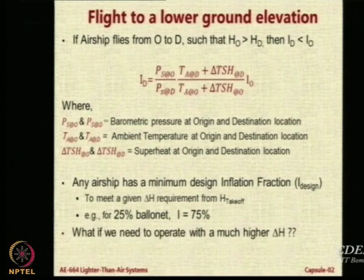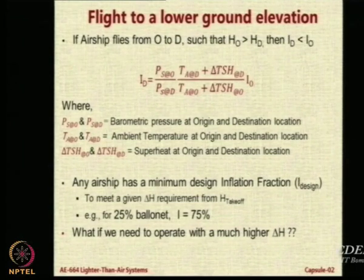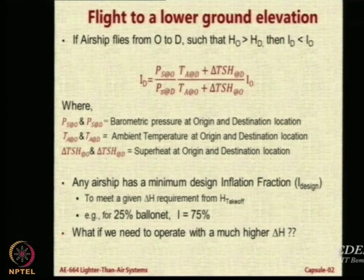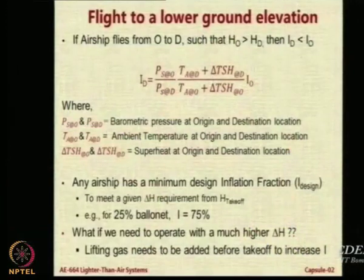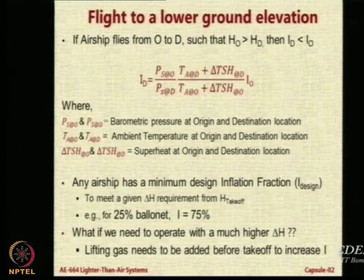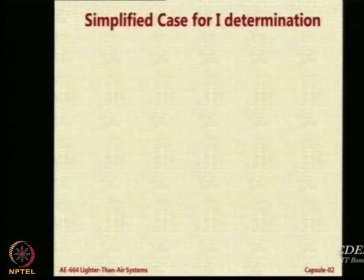So, what do you do if you want to operate with a much higher delta H? Delta H is the height change — meaning if I want to go from Pune to a high altitude and come down to Mumbai, the delta H required is from Mumbai to that height. What do I do? The only option you have is to change the lifting gas — you have to add lifting gas before takeoff to take care of the height difference.